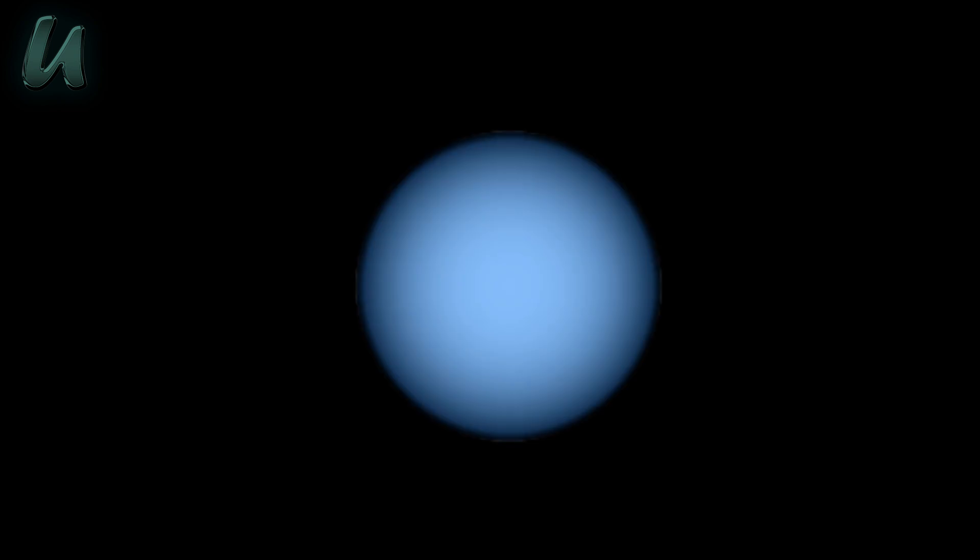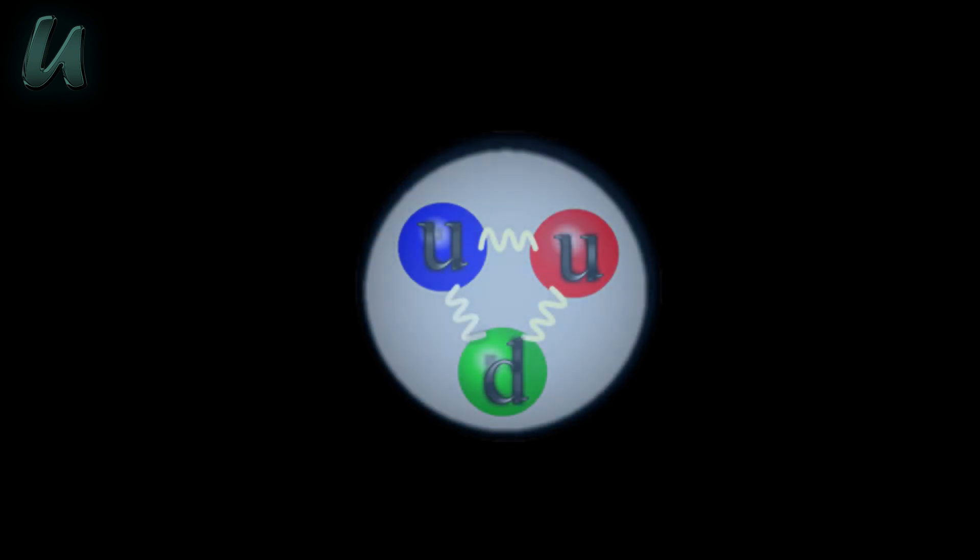So can we go smaller than a proton? Most definitely, protons are made of quarks. Three quarks make one proton. A proton is made up of two up quarks and one down quark.